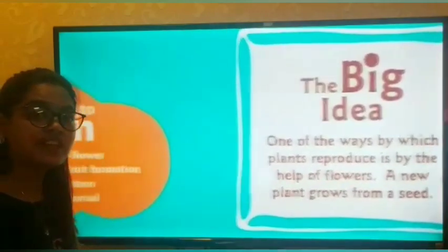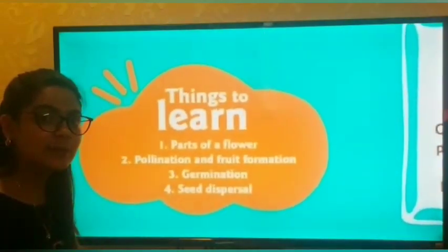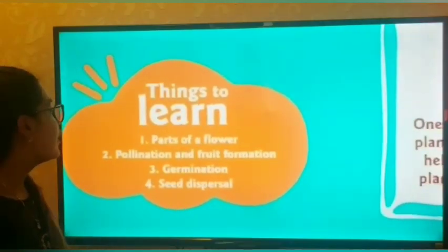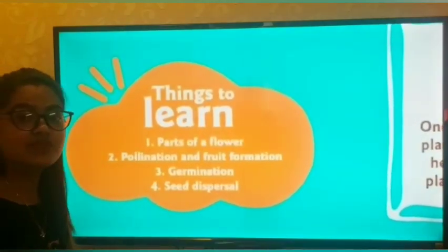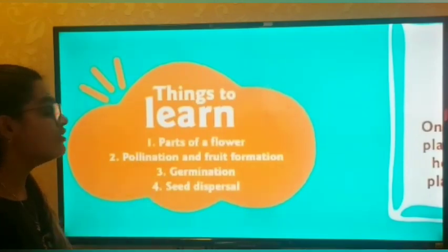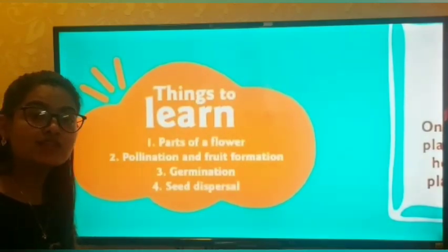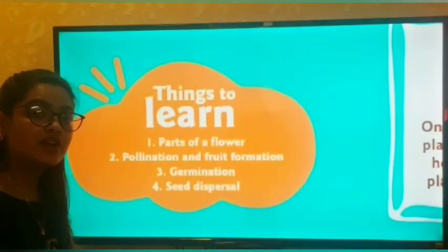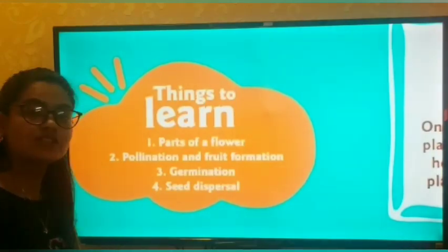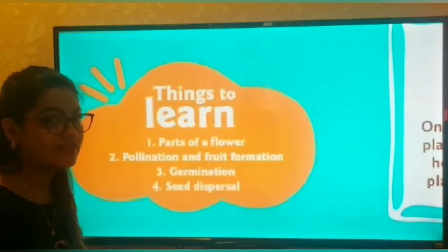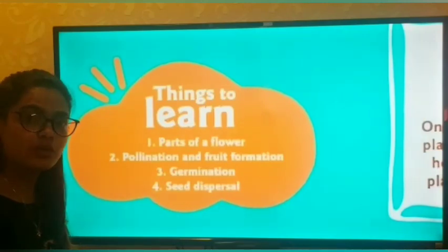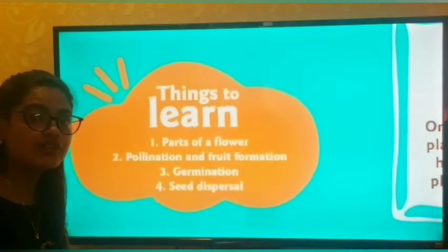Now, which are the different things we are going to learn in this chapter? Number one, the first thing we are going to learn is parts of a flower. In 3rd standard we have studied parts of a plant; now we are going to study about parts of flowers. The second point is pollination and fruit formation — we are going to study about pollination and formation of fruit.